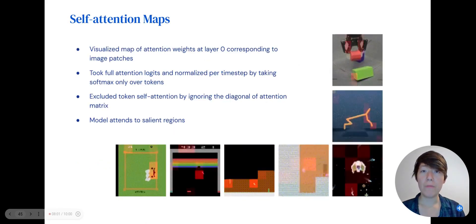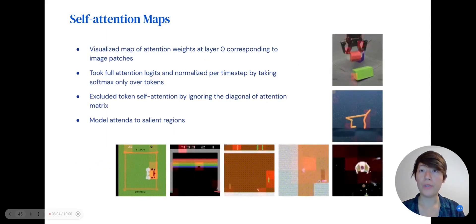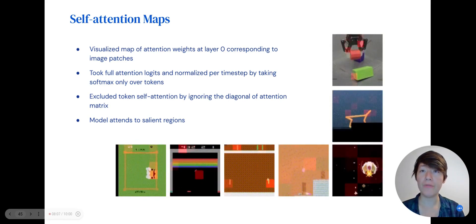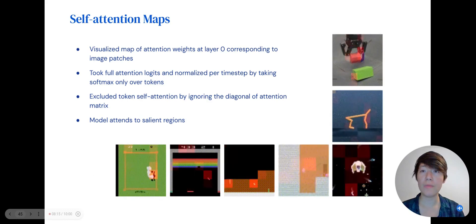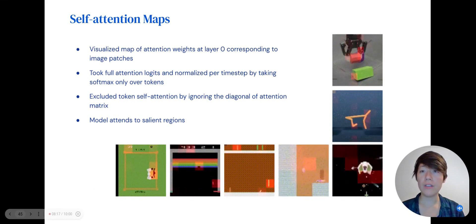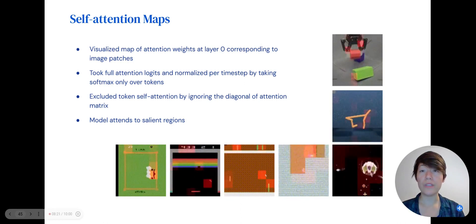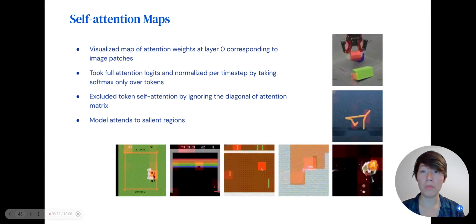To understand what Gato attends to, we took the transformer attention weights at layer 0 and visualized the self-attention over the corresponding image patches. Gato attends to salient regions in the image, such as the robot embodiment, the character belonging to the player, the score in Atari, and tools like the ball in breakout in Pong or the blocks in robotics.